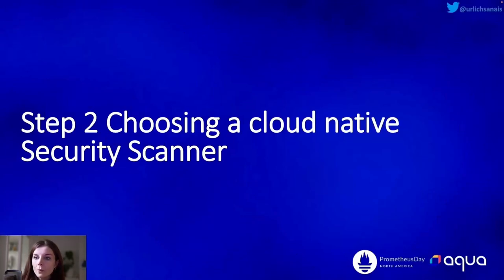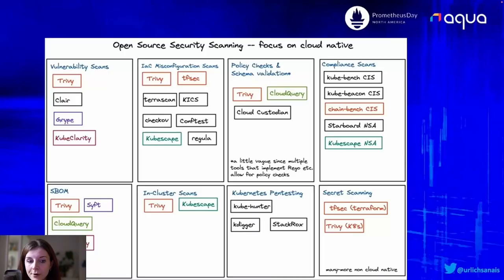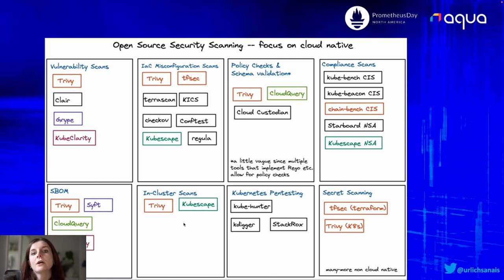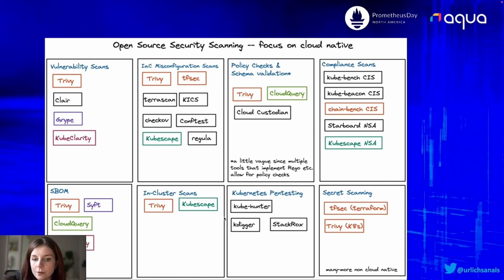Once we understand our needs, we have to choose a cloud native security scanner. If you follow me on Twitter you might have come across this graphic of different open source security scanners across the cloud native space. Since I want to integrate the security scanner into our observability stack which runs as Kubernetes resources within our cluster, we're going to focus on in-cluster security scans.